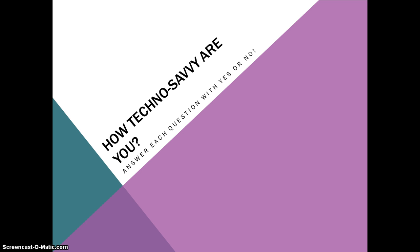The first thing that we're going to do is take a little informal quiz on how techno-savvy are you. It's really meant to see how prepared you will be if you plan to take some online courses through college or high school level. You'll go through these questions and on a piece of paper, just mark down how many times you answer yes, and then at the end we're going to count up your score and see how you rate.